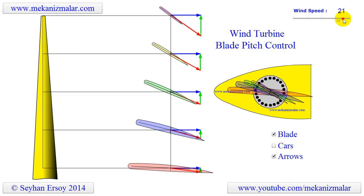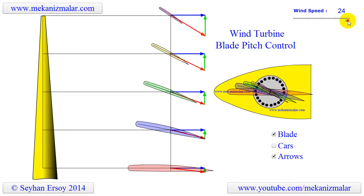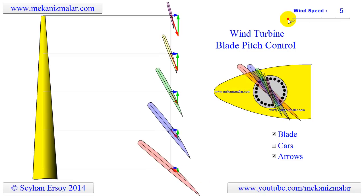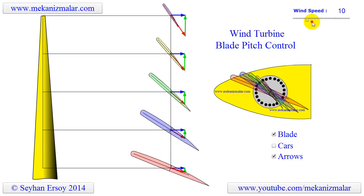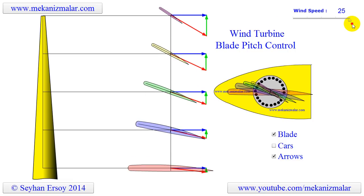This can be observed by comparing the angle of airfoil with the angle of the red arrow. You should also notice that when the wind speed is low, the blade shows the maximum area to the wind. When the wind speed approaches the upper limit of operation, the blades show minimum area to the wind.